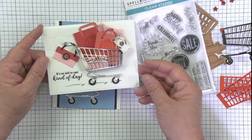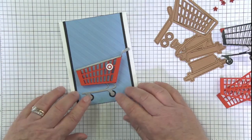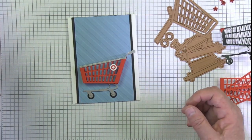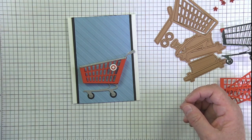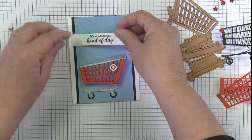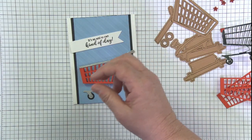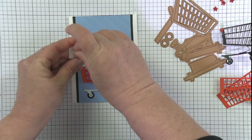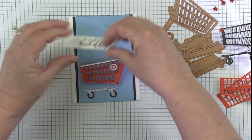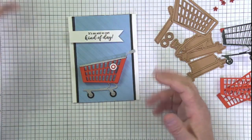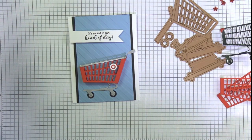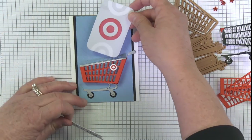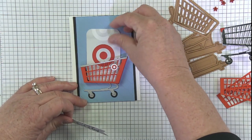The stamp set is super fun. We've got our fun little cart going on here and now I've got a sentiment which of course does come from the stamp set also. It's called It's an Add to Cart Kind of Day and I thought this would be super fun just for a more generic gift card type of thing. And guess what fits in this card, where this is all happening right here. One of these fun little gift cards. Look, fits in there just perfect.